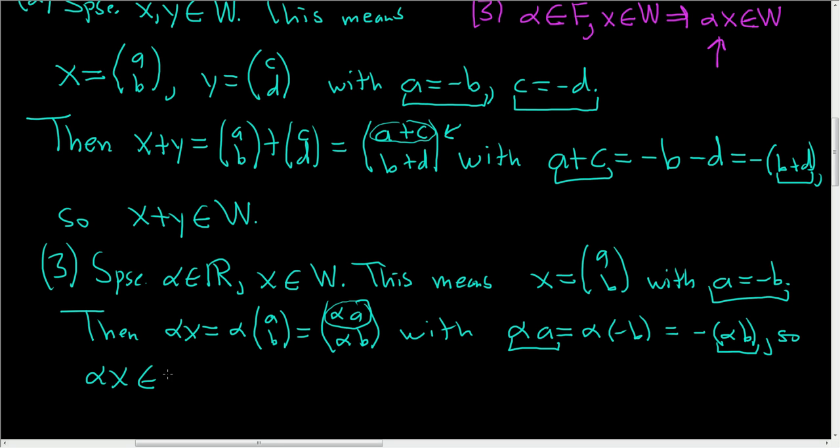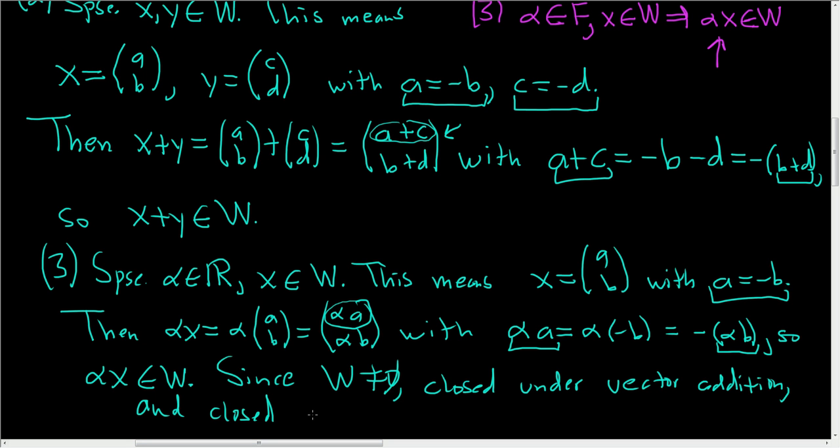So this is precisely what it means for the vector alpha X to be in W. So alpha X is in W. So since W is non-empty, closed under vector addition, and closed under scalar multiplication.